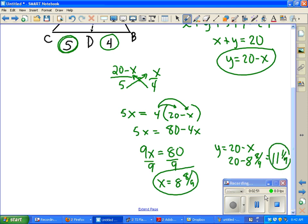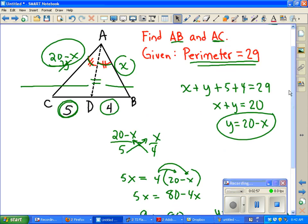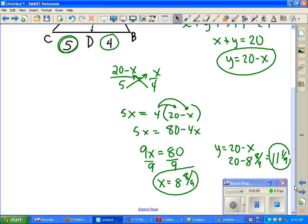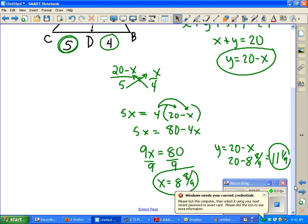These two, 11 and 1 ninth and 8 and 8 ninths, should add up to 20. Therefore, we've got X and 20 minus X. So we now know that AB and AC are 8 and 8 ninths and 11 and 1 ninth. Those are the answers.